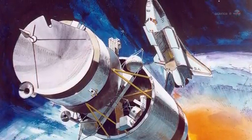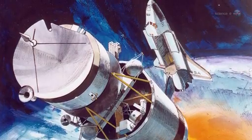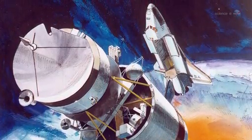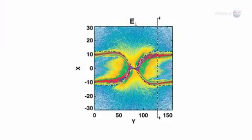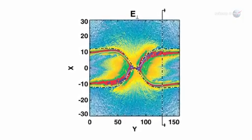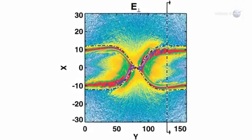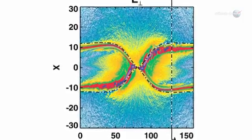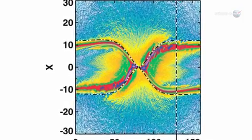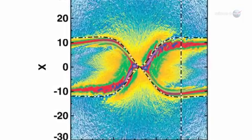Because Polar carried sensors similar to those of MMS, Scudder decided to see how an X-point looked to Polar. Using Polar data, we have found five simple combinations of magnetic field and energetic particle measurements that tell us when we've come across an X-point or an electron-diffusion region.